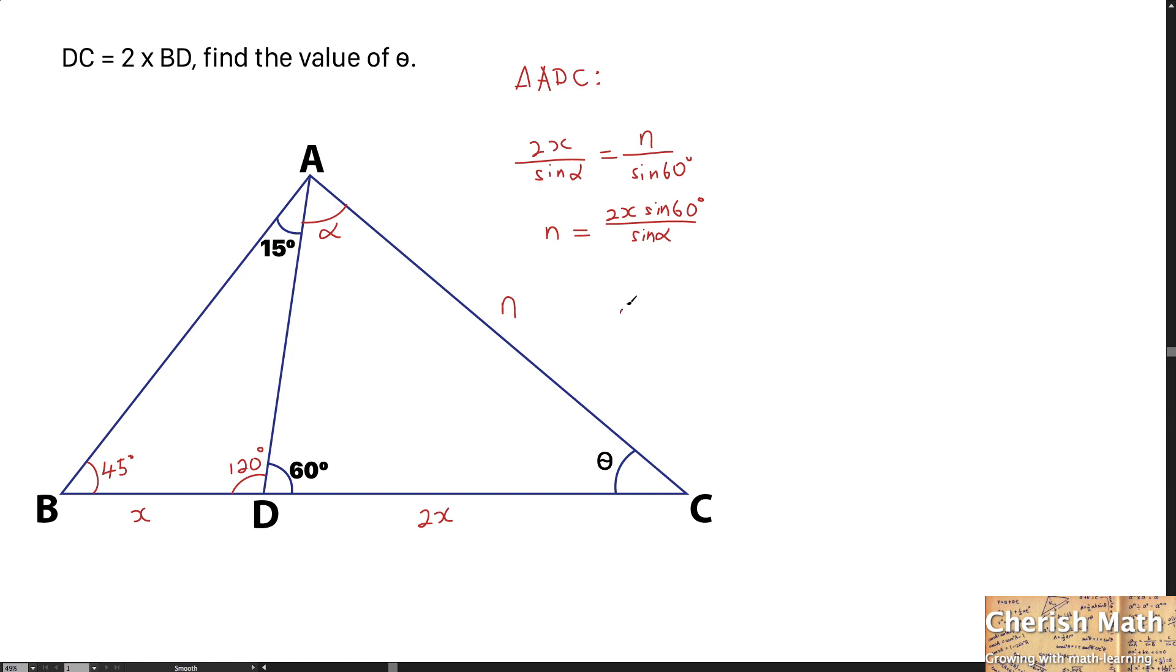By referring to the largest triangle here, triangle ABC, I'm going to use the sine rule again to work out the equation. That becomes N over sine 45 degrees.